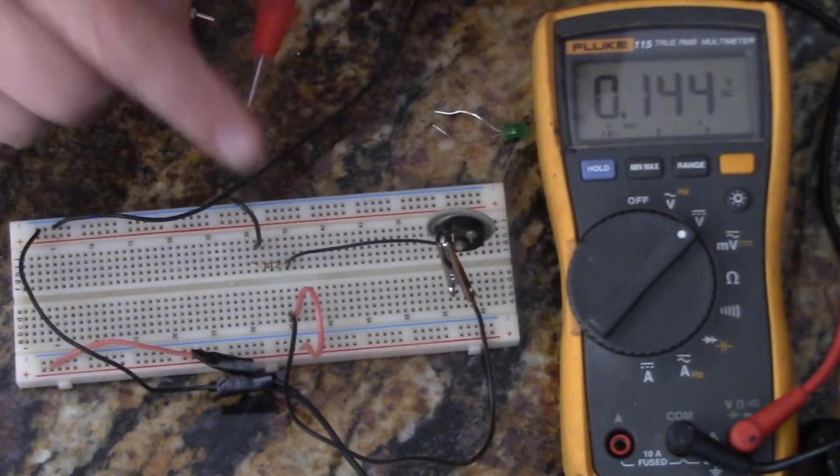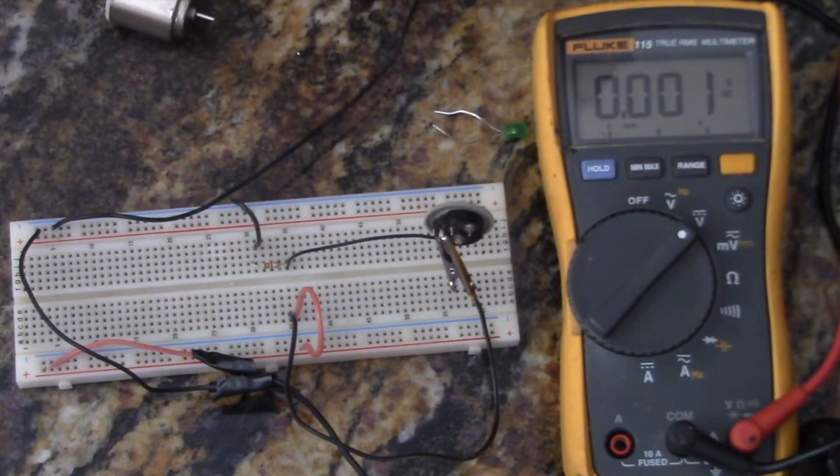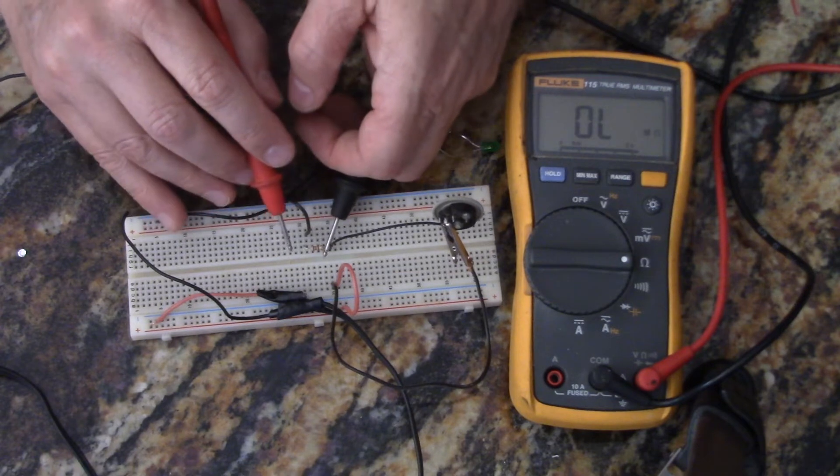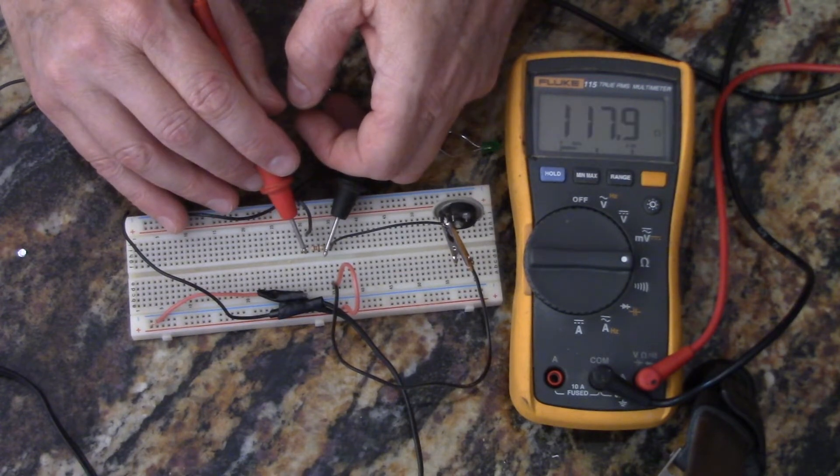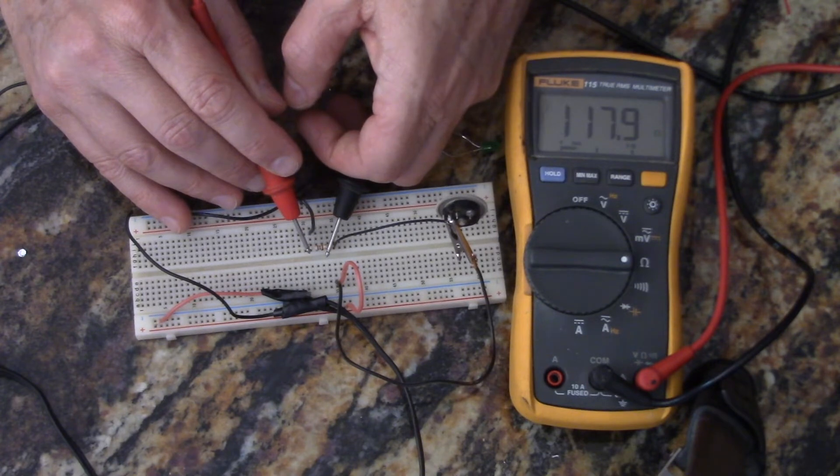And so this is a 20,000 ohm potentiometer and then I'd have to measure how much this is. We can do that now. So that's 118 ohms.